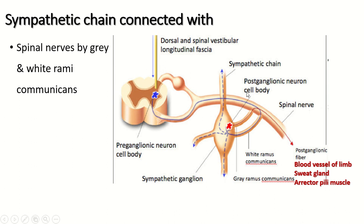The sympathetic chain is connected with the spinal nerve by two branches: the white rami communicants and gray rami communicants. The preganglionic fiber leaves the spinal cord through the ventral root of the spinal nerve, reaches the trunk of the spinal nerve, then leaves the spinal nerve via the white rami communicants. The postganglionic fiber has no myelination and re-enters the spinal nerve via the gray rami communicants, distributing to blood vessels of the limb, sweat glands, and arrector pili muscles.